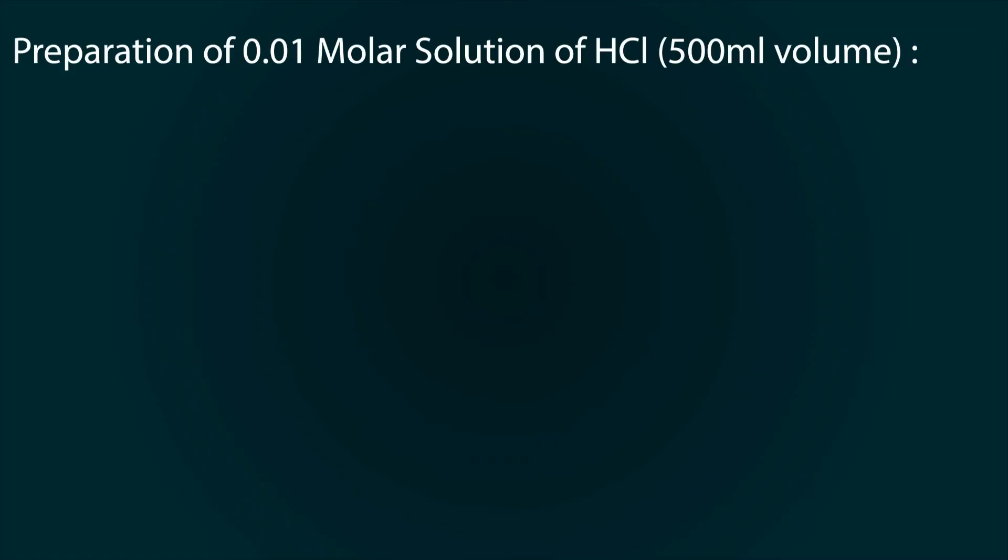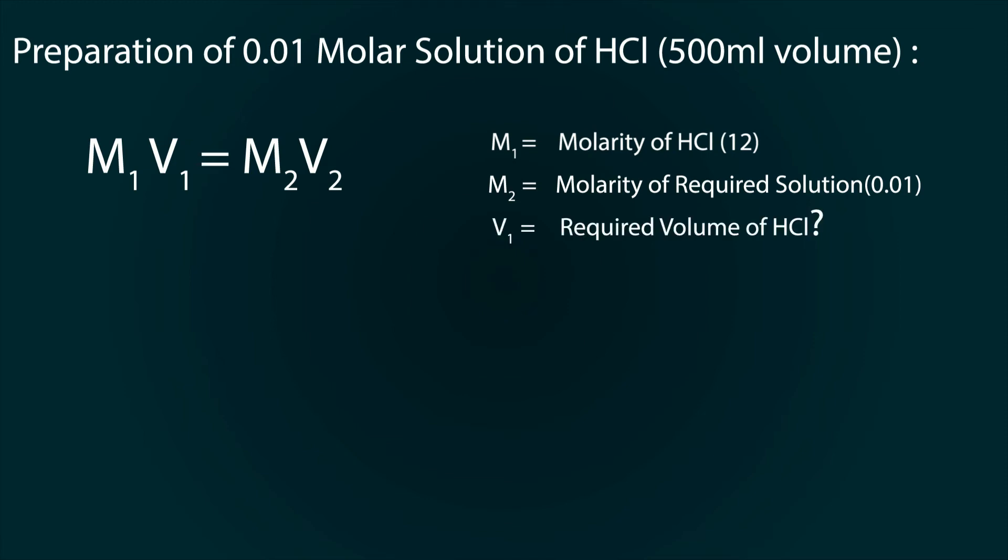Now let's calculate the volume of 0.01 molar solution. We have the formula M1V1 equals M2V2, where M1 is the molarity of HCl which we found as 12, M2 is the molarity of our required solution 0.01, V1 is our required volume from 12 molar solution, and V2 is our final solution volume which is 500 ml.